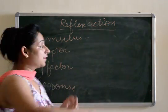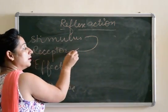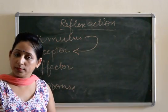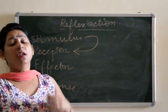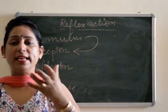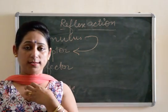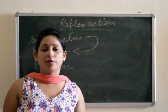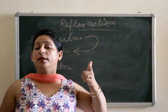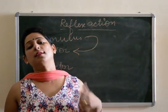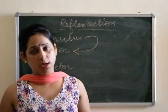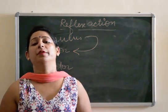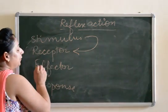There is the Receptor. The part of the body which receives the Stimulus is known as a Receptor. Like all the sense organs of our body — eye, ear, nose, skin — all five sense organs are Receptors. All of them receive the Stimulus from the outside environment and we show the Reflex Action.